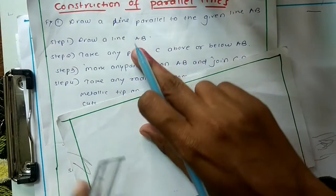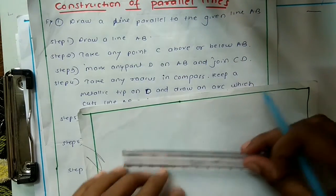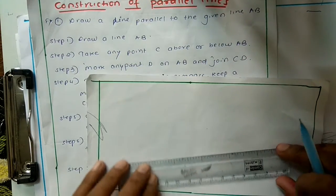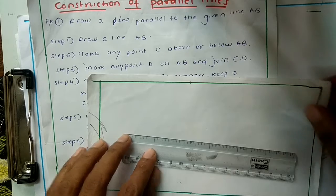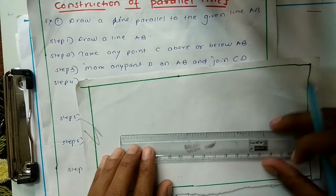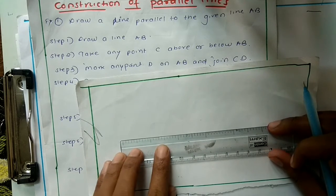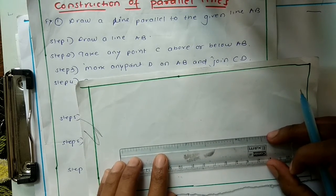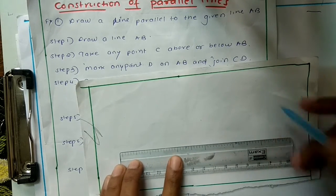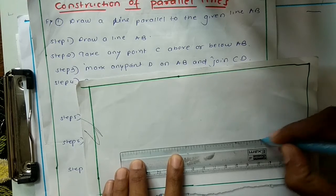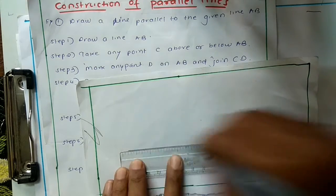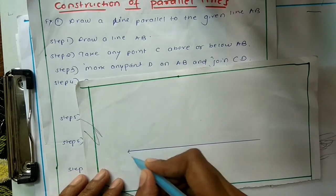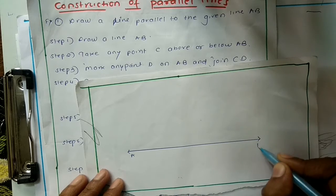The first step is to draw line AB. Since it is a line, you can take any measurement and draw it. This is the line AB — let us name this as AB.